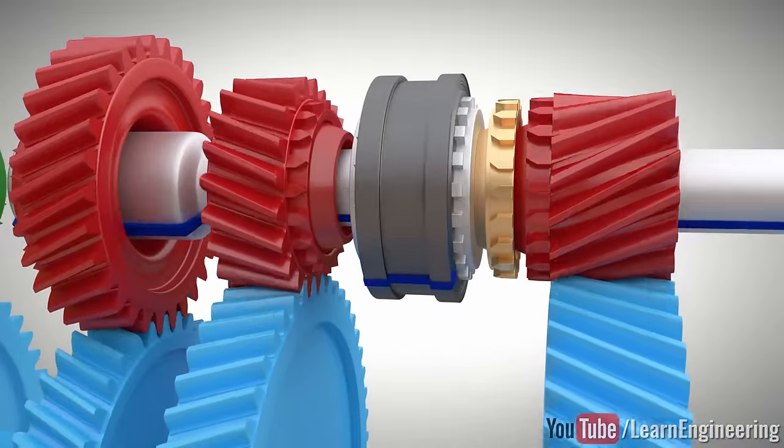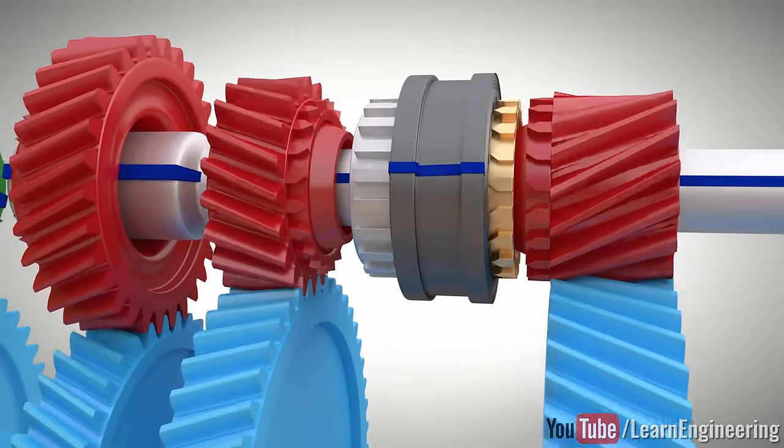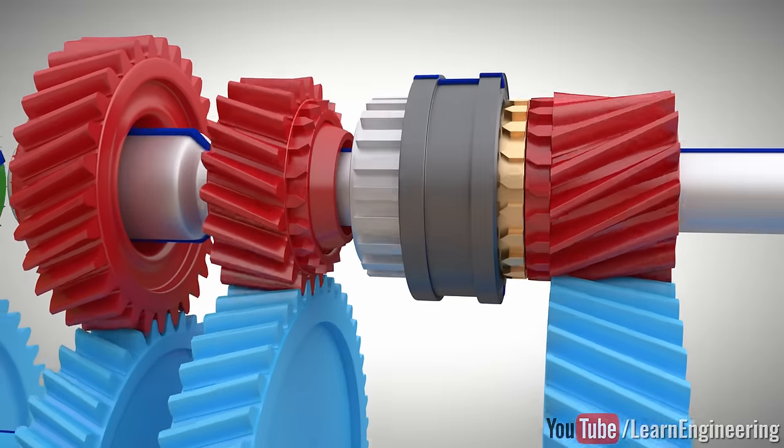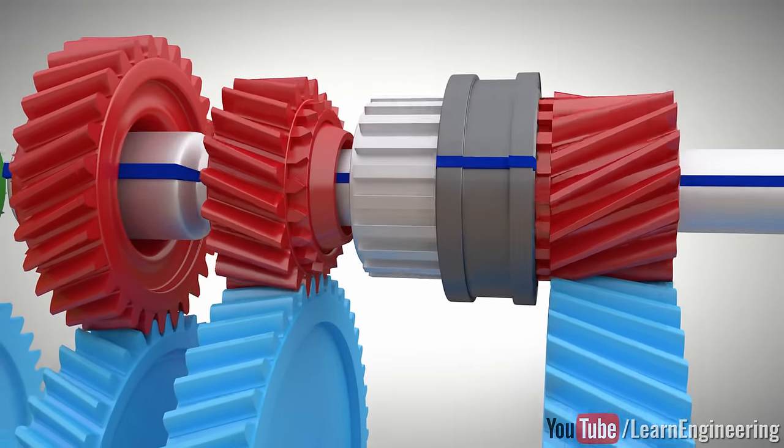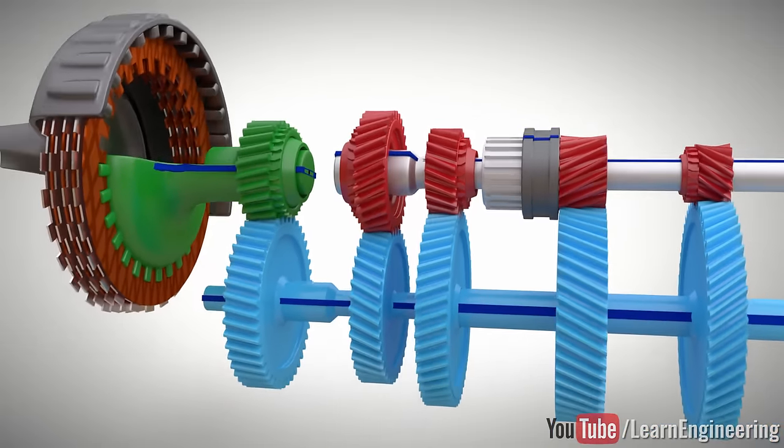When there is no power flow, pushing the synchronizer ring against the gear will help match the speed of the gear to the hub. Now, we can have a smooth connection. After the connection, clutch pack is engaged.